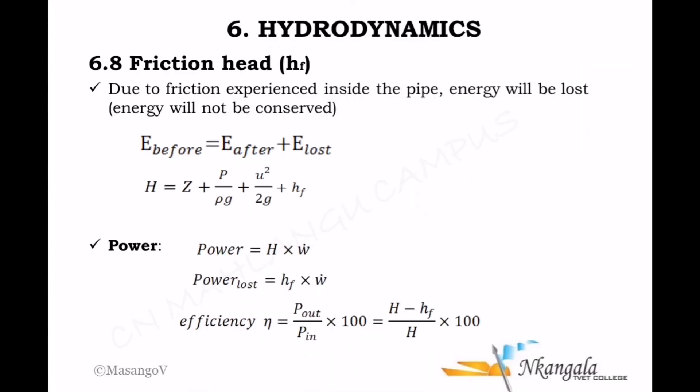When there are losses, remember that the energy of a fluid remains unchanged only when no energy enters or leaves the system. When there is a loss — energy leaving the system — we say: energy before equals energy after plus some loss of energy. Friction represents a loss; it takes place every time fluid flows inside a pipe, as the water particles rub against the pipe surface.